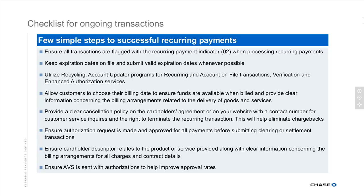Always provide customers with a clear cancellation policy so they know what it is in the event they decide to terminate or charge back an item — you want the right defenses in place. Let your customers decide what their billing date is; sometimes a billing date towards the end or middle of the month is easier for them. If you allow consumers to make those changes, you'll have much happier customers. Always make sure to send AVS with your authorizations. AVS will help you identify potentially fraudulent transactions and also reduces the overall expense of that transaction.